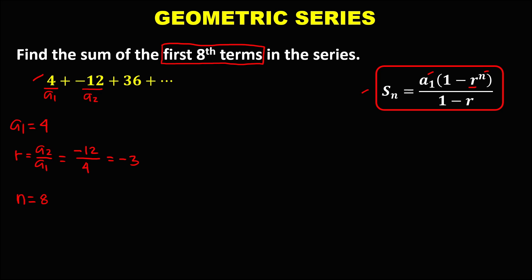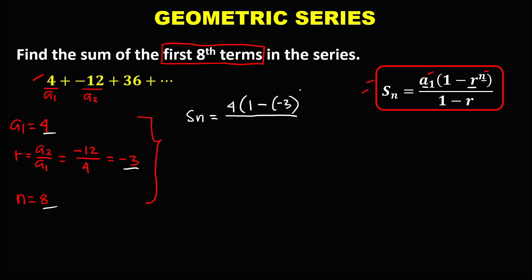Since all the values are given in this formula, we can solve the sum of the first 8 terms of this geometric series. So the sum equals A sub 1, which is positive 4, times 1 minus R, and R is negative 3, to the power N, and N is 8, then over 1 minus R, where R is negative 3.